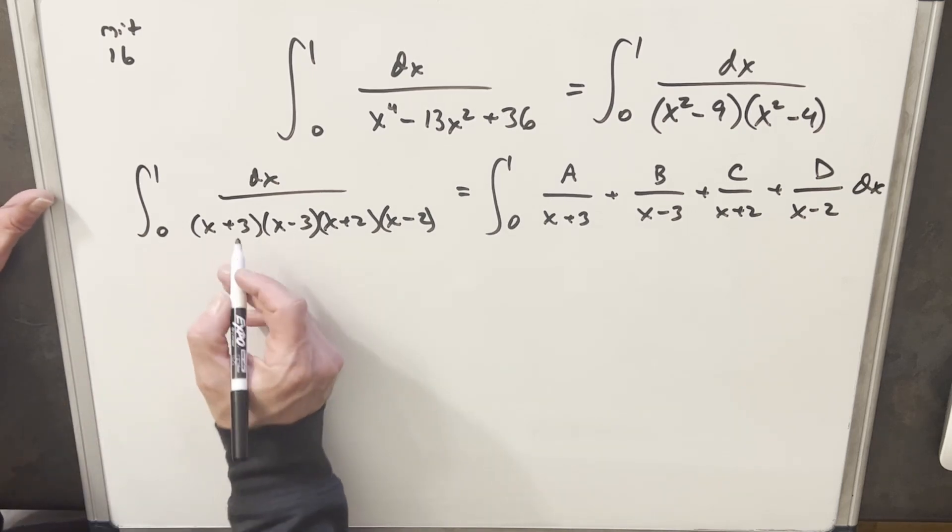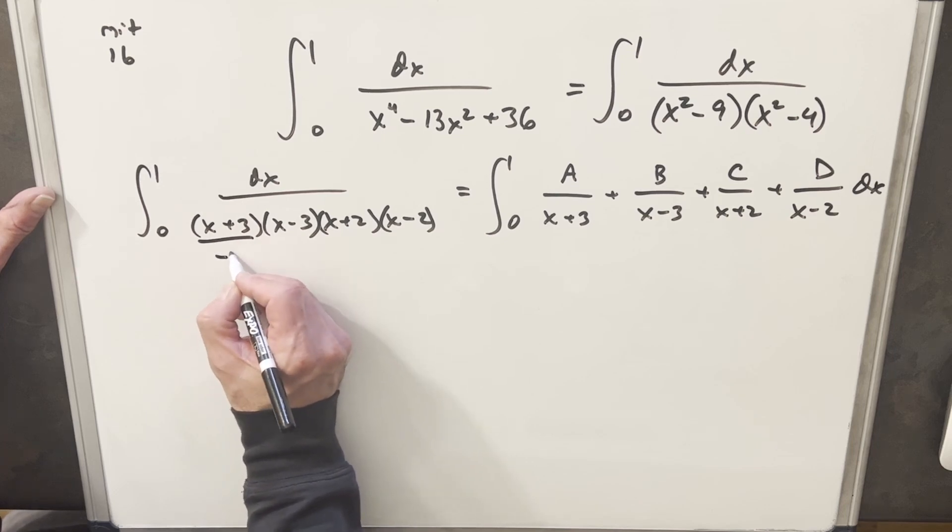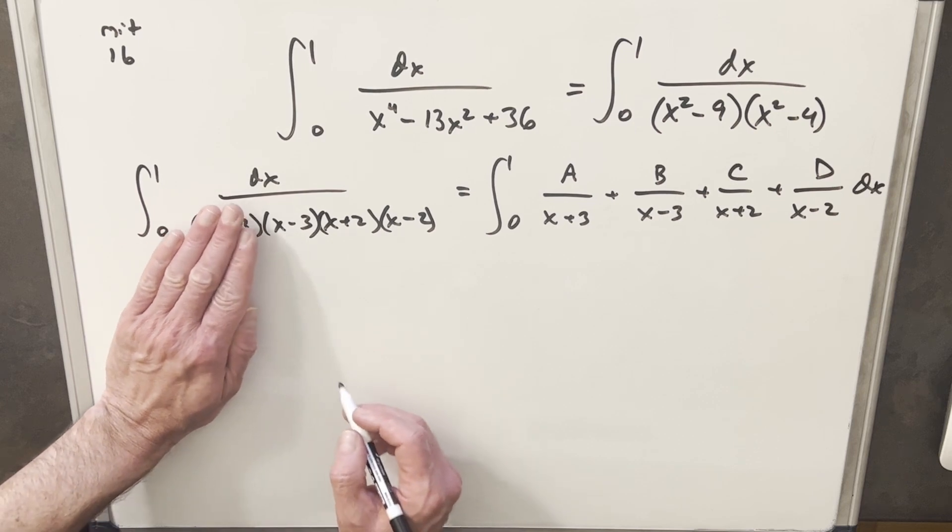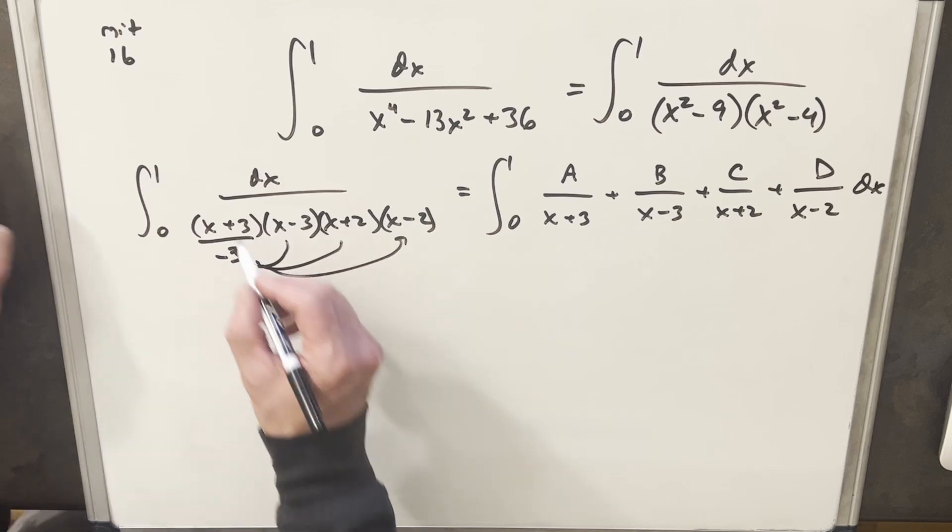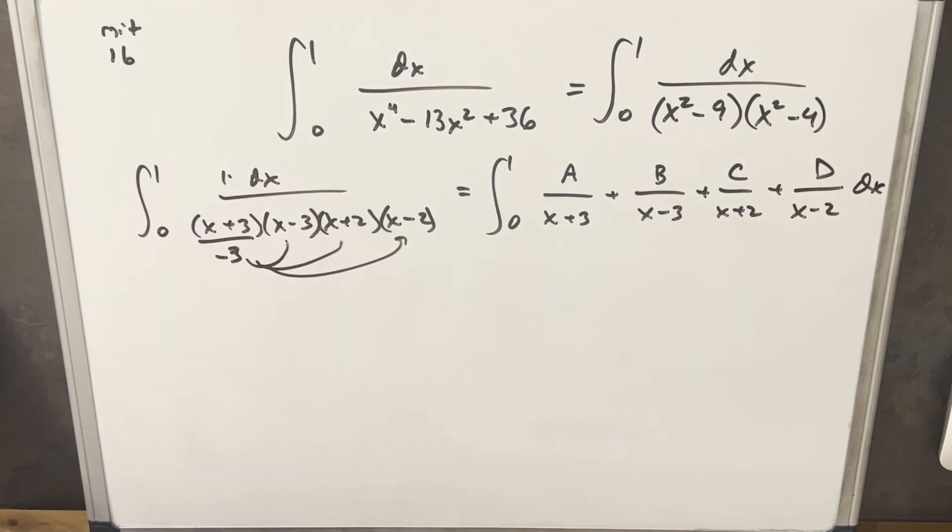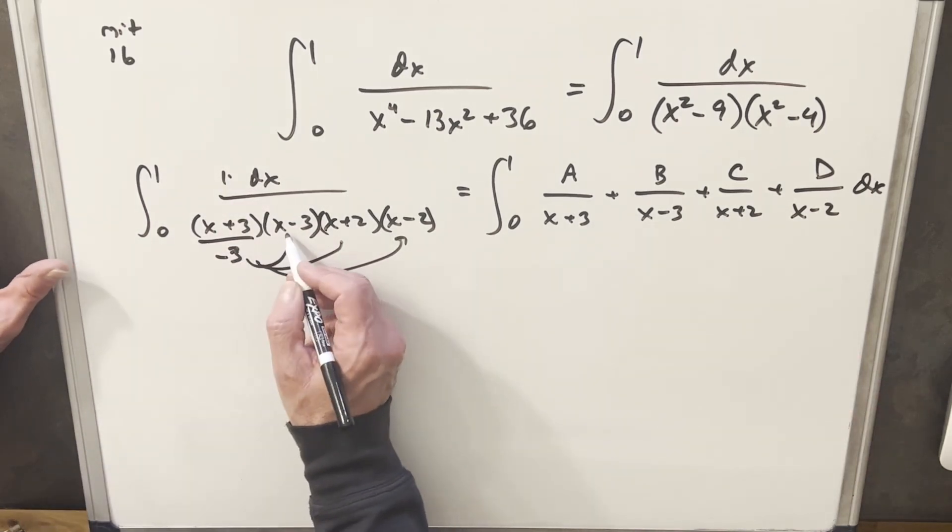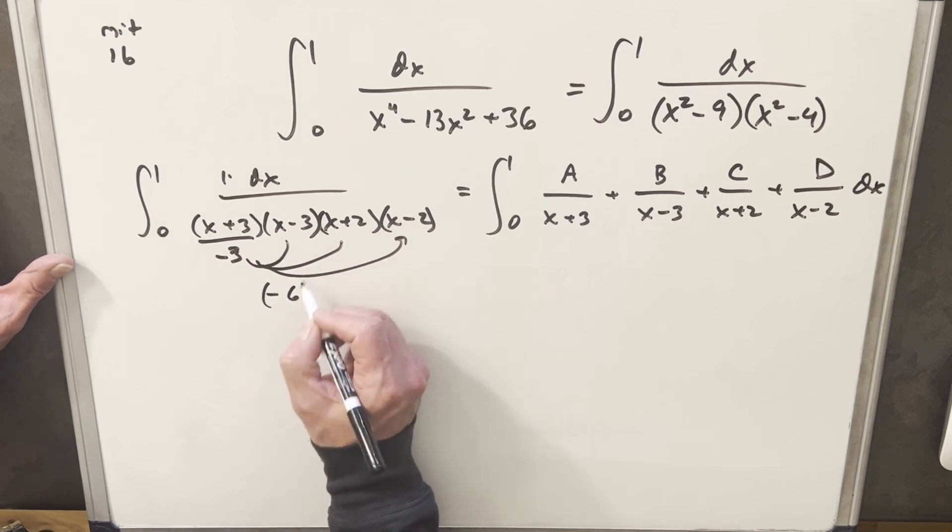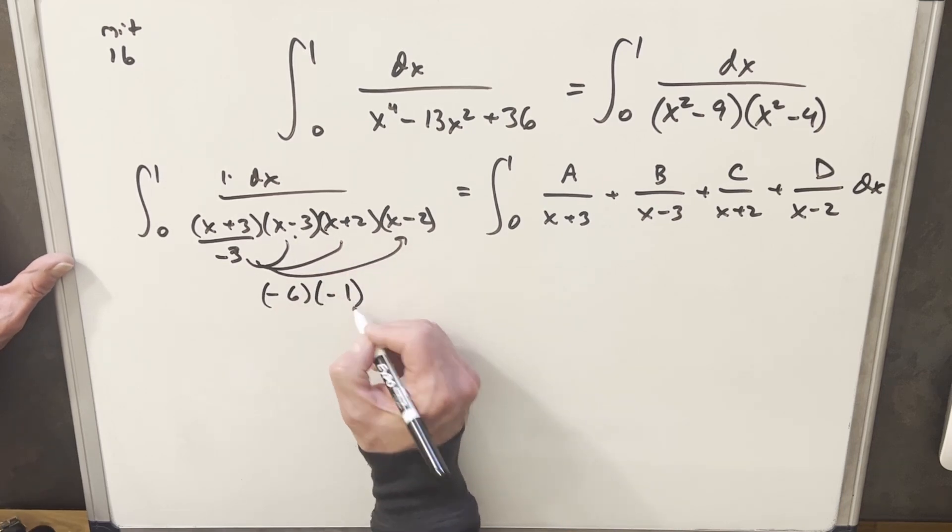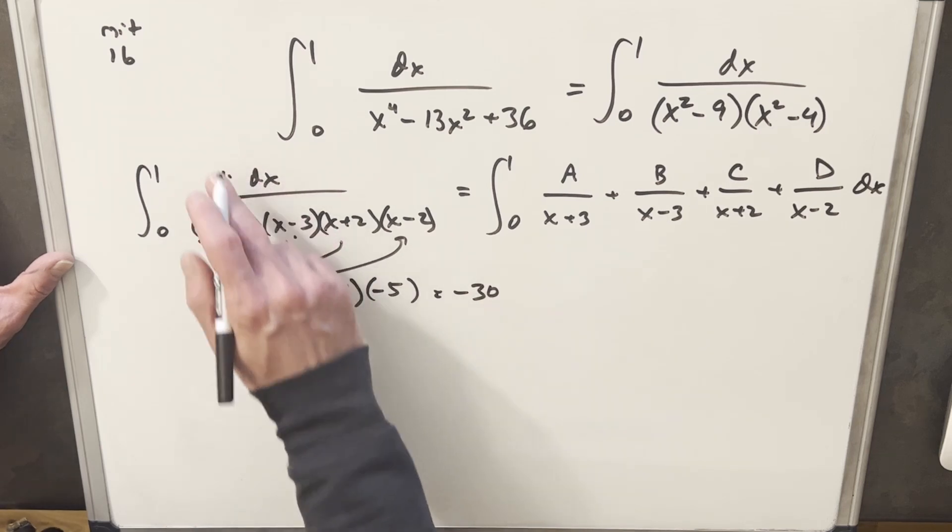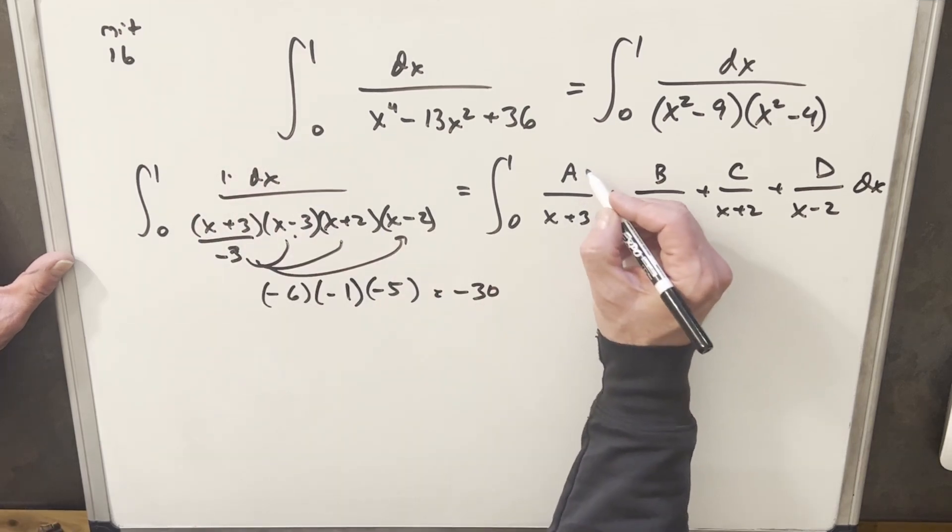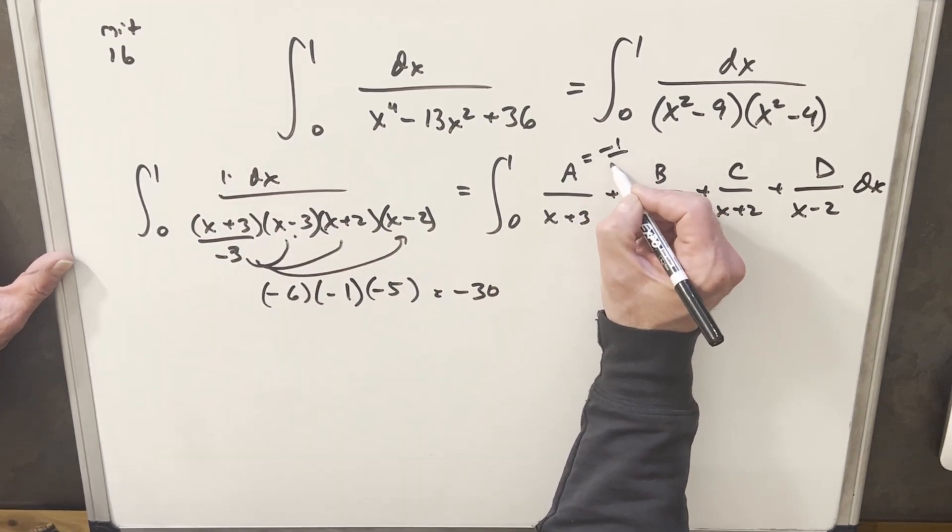So for the cover-up method, we'll just start with this first term. What I'm gonna do is plug in the value that's gonna make this zero. Okay, so it's minus 3. And then what I do is I cover that up, I take the minus 3, I plug it in everywhere else, and we just figure out what we have. We have a 1 here. We'll do this one all the way out and then we'll blast through the others. So if I plug minus 3 in here, we're gonna have minus 6 for this term, minus 1 for this term, and then a minus 5 for this term. Multiplying that out gives minus 30, but remember we have a 1, so we're 1 over minus 30, and so our a value is just gonna be minus 1 over 30.